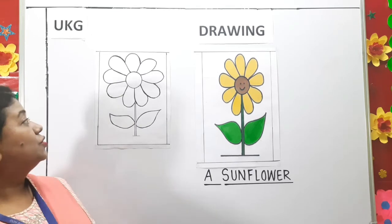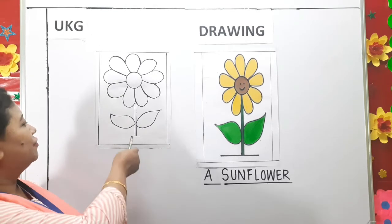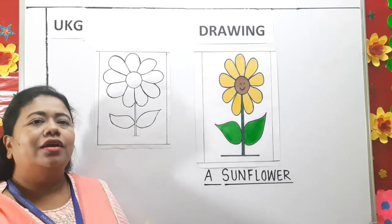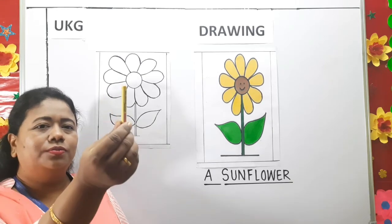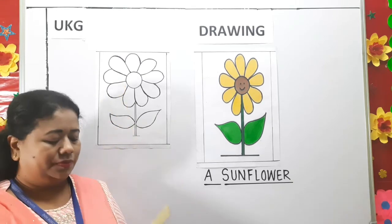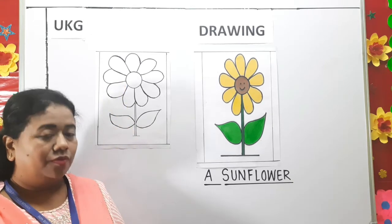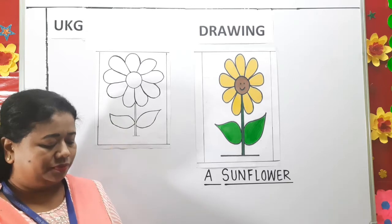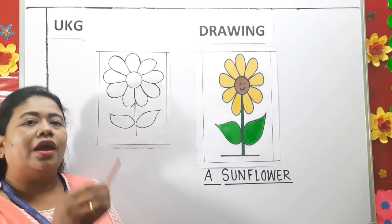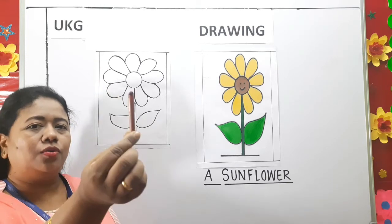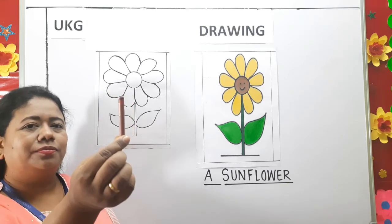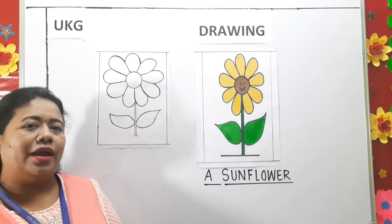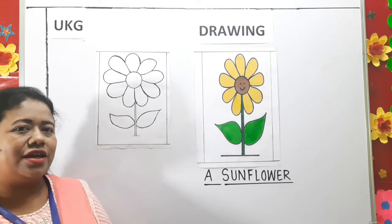Now, to color this sunflower, I am going to take yellow, green color and brown color. Okay children, so let us start.